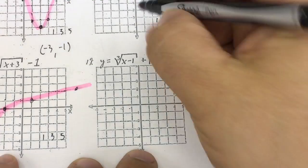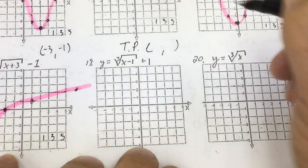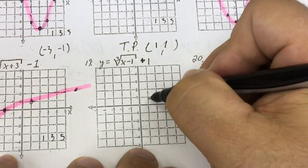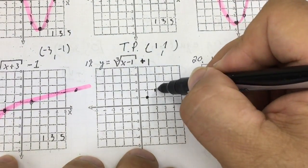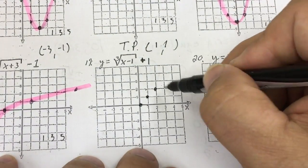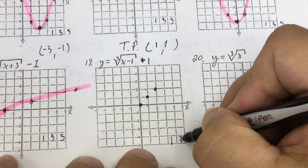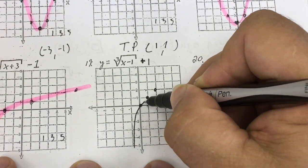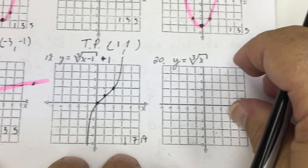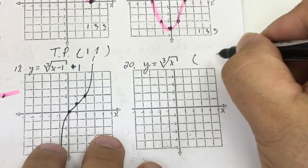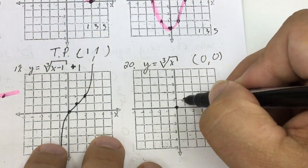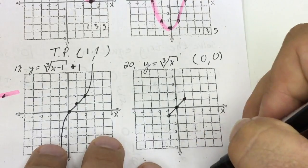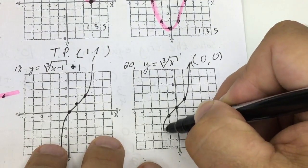A cube root — a little bit more difficult. It has what we call a turning point at opposite same: (1, 1). So I go right 1, up 1. A cube root function goes up 1 over 1, down 1 over 1. I'm supposed to go up 7 from here — it's supposed to be 1, 7, 19 — but I never have enough room, so I just fake it. Cube root of x is located at (0, 0): up 1 over 1, down 1 over 1, supposed to go up 7 but I fake it.